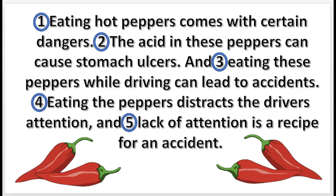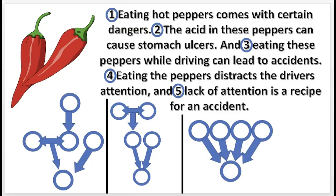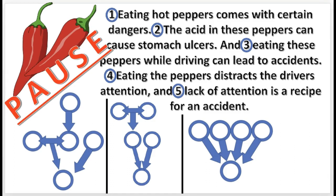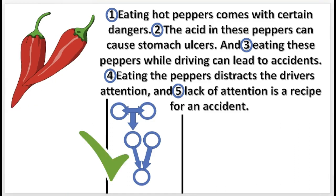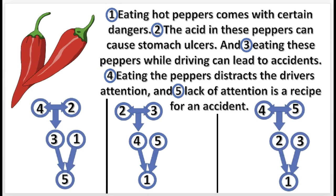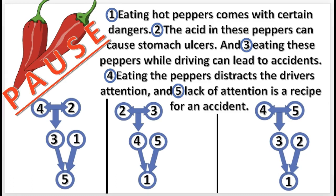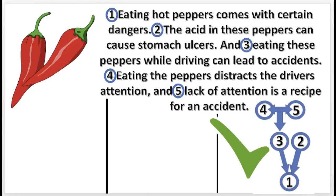Here's another practice problem. Begin by selecting the correct diagram for the argument and press pause. That's correct. Now choose the correct sequence of statements in the argument and press pause. That's correct. 2 and 3 support 1 independently, and 4 and 5 support 3 conjointly.